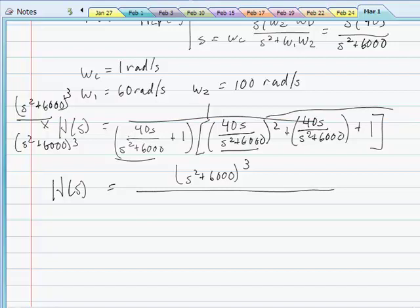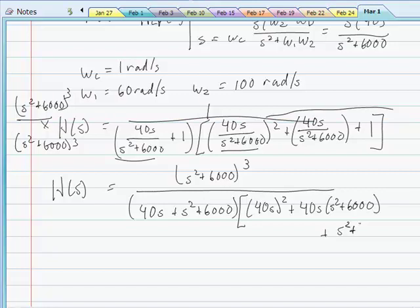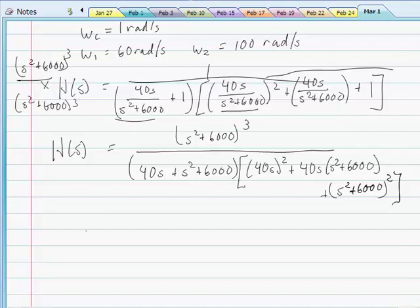...we'll get H of s equals s squared plus 6,000 quantity cubed divided by what we'll have here is 40s plus s squared plus s squared plus 6,000 quantity squared plus 40s times s squared plus 6,000 quantity squared.